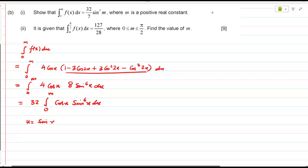So let U be equal to sine x, so du by dx, derivative of sine x is what? Cos x. So du upon cos x is equal to dx, correct?